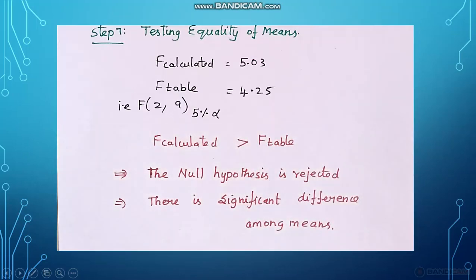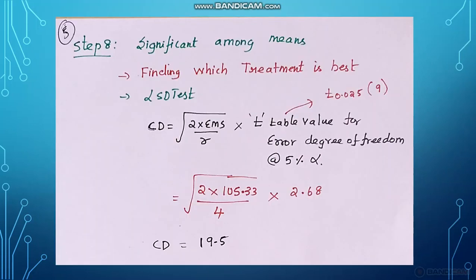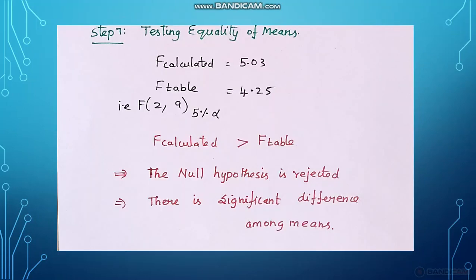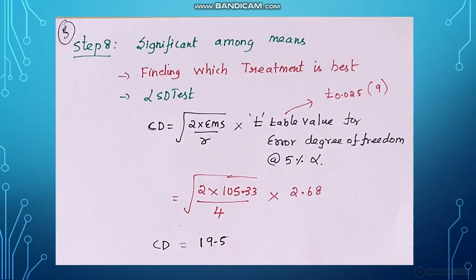In step 7 we got significant results, so we are going for step 8 to find which treatment is best, based on the LSD test. LSD means Least Significant Difference test. The CD value formula is: 2 into EMS, where EMS is the error mean square. We will get the CD value from this.